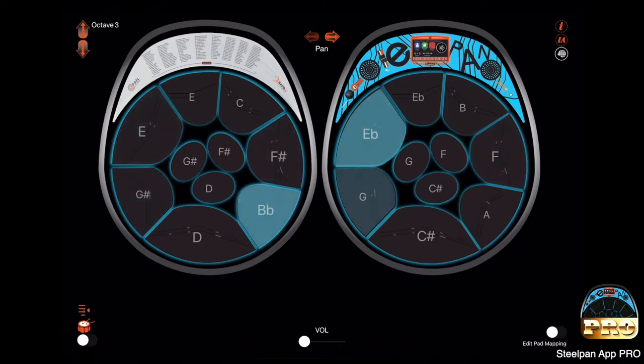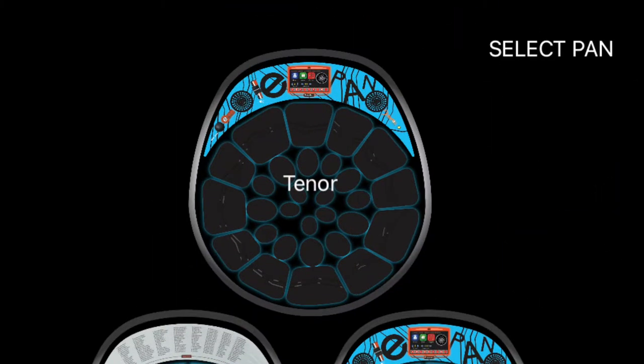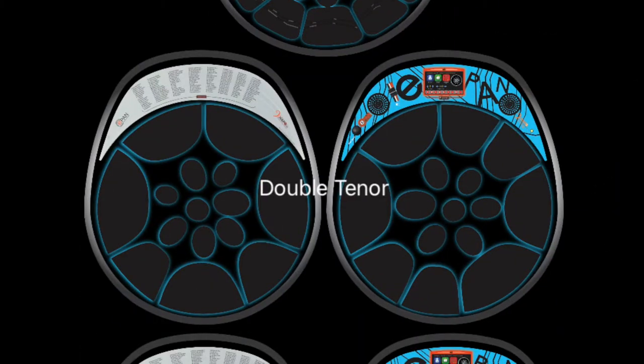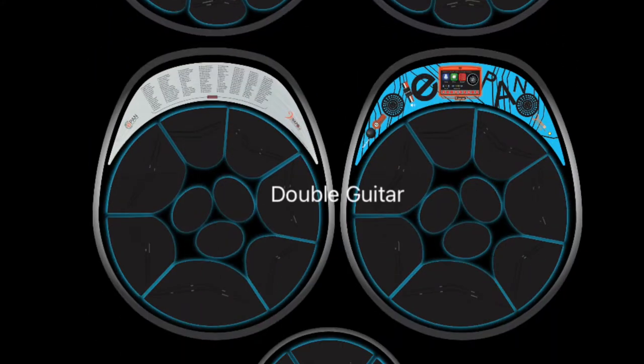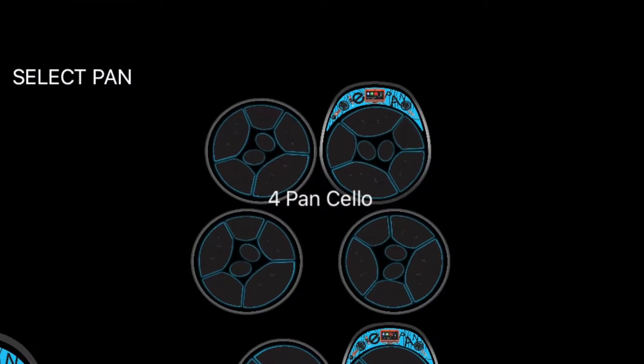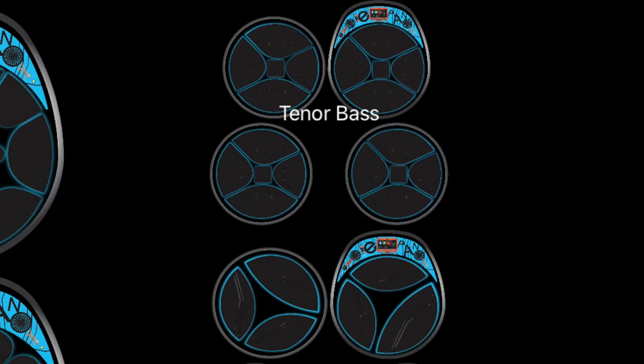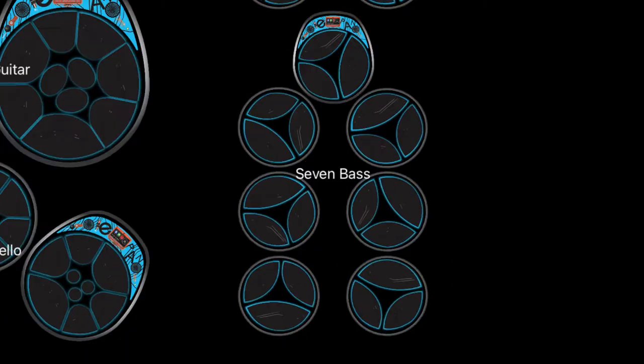It is, as the name implies, the best SteelPan app on the market. It includes instruments such as tenor (soprano voice), double tenor (alto voice), double seconds (alto voice), double guitar (tenor voice), triple cello (tenor voice), four pan cello (tenor voice), tenor bass (baritone voice), six bass (bass voice), and seven bass (bass voice).